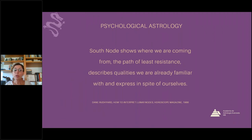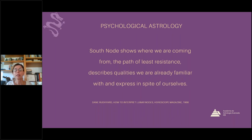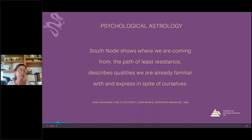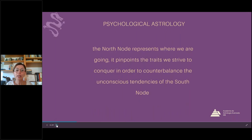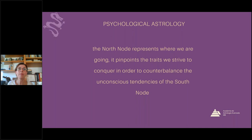Again, according to Dane Rudhyar, the south node shows where we are coming from — he refers to past lives, but you don't need to believe in past lives in order to do draconic astrology. It shows the path of least resistance and describes qualities we're already familiar with and express in spite of ourselves — like a lemon tree that produces lemons without a conscious decision. The north node represents where we're going and pinpoints the traits we strive to conquer in order to counterbalance the unconscious tendencies of the south node.